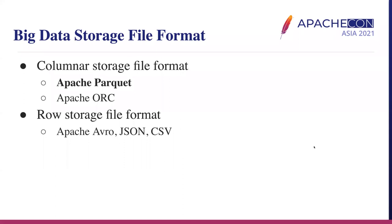Before we start, let's have a quick review of big data file formats. There are many types of storage file formats. In the data and analytics world, they can be divided into two major categories: column and row storage. For column storage, there are mostly Apache Parquet and ORC. These file formats are used very widely by Spark, Hive, Presto, Delta Lake, Hudi, etc. In today's talk, we mainly focus on Apache Parquet.